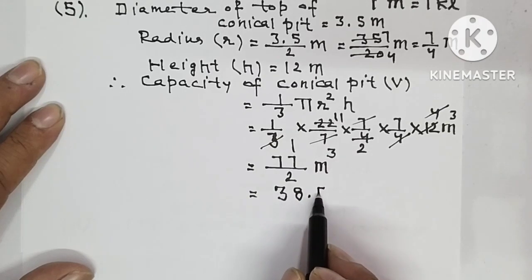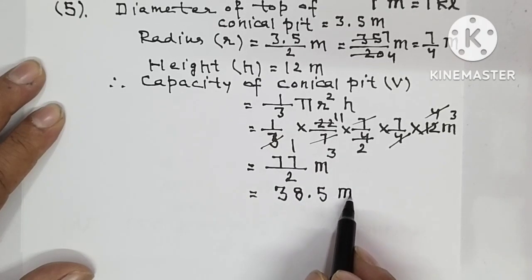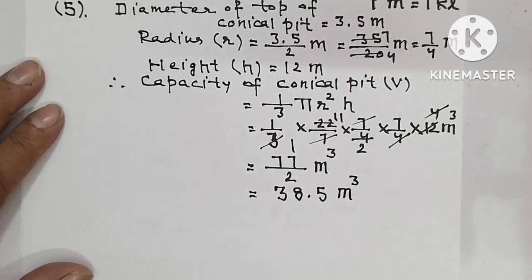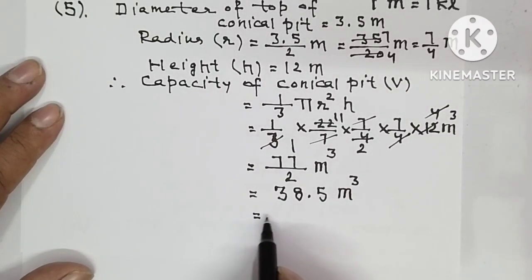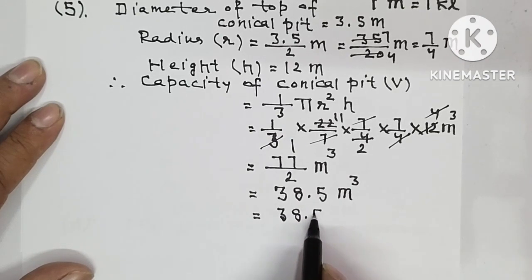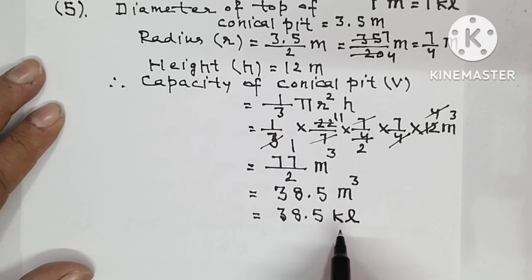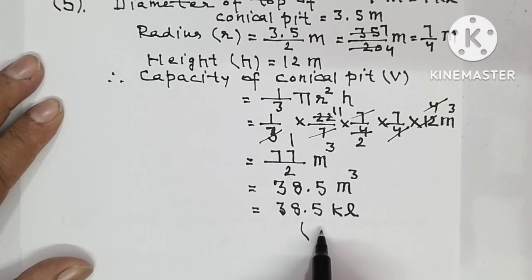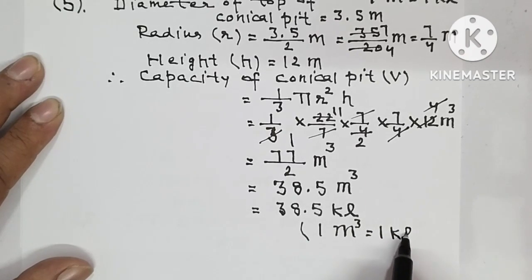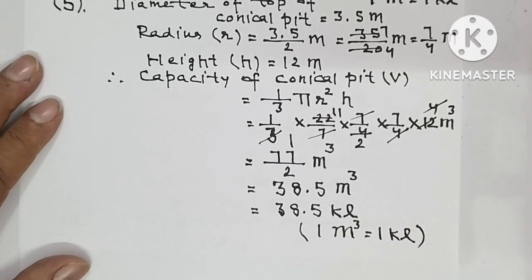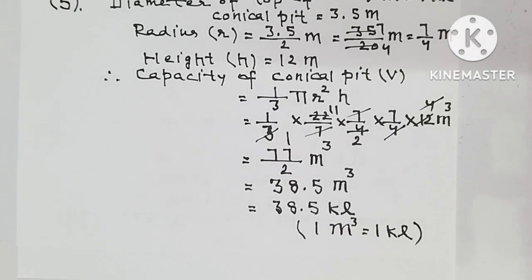Now you can convert it into points: 2 threes are 6, 1, 7, 17, 2 eights are 16, point 1, 2 fives are 10, which gives 38.5 meter cube as the capacity. You can convert it into kiloliters, so it will be 38.5 kiloliters, as I have already given the relationship in the beginning that 1 meter cube is always equal to 1 kiloliter.